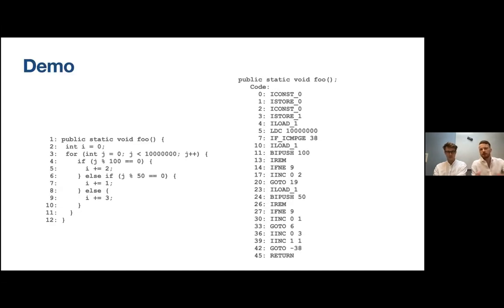Now you should have a better understanding of how the Java Virtual Machine works. For our demonstration, we're going to go through a program with the Java code on the left and the compiled bytecode on the right. The interesting part of this program is that it has a loop that will run for very many iterations and has three distinct paths through that loop, all of which will be run for many iterations and therefore become hot at some point.